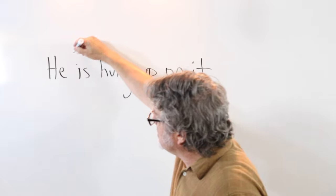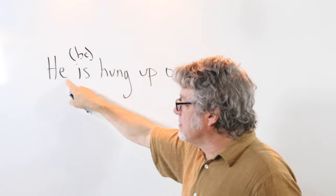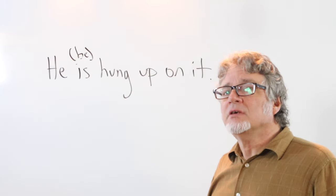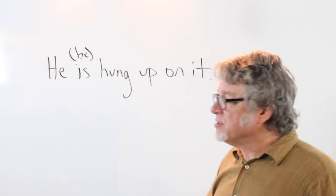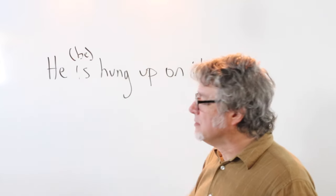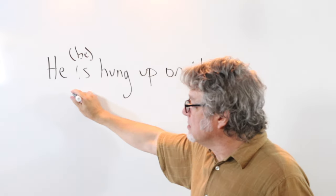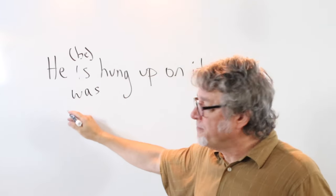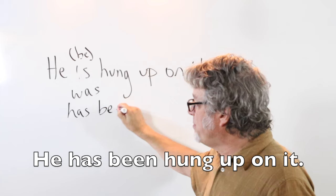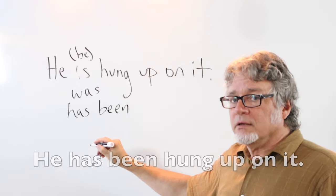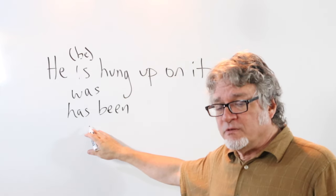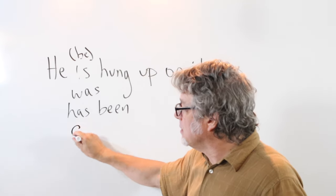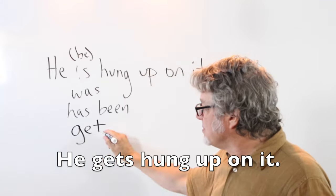Remember that this is the verb 'be' and it changes according to the subject. In the present tense: 'He is hung up on it' or 'He's hung up on it.' In the past tense, just change this to 'was.' You can also make it present perfect: 'He has been hung up on it.'